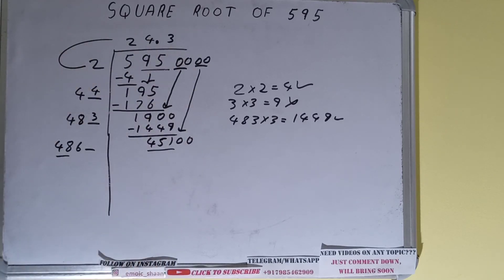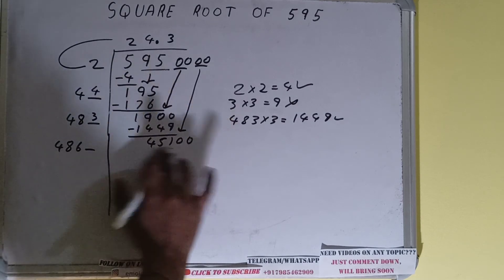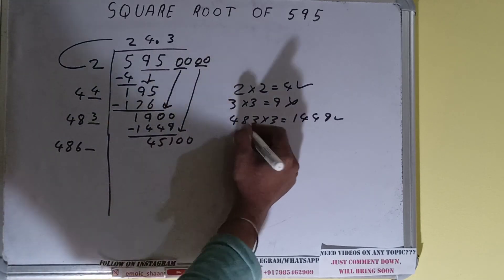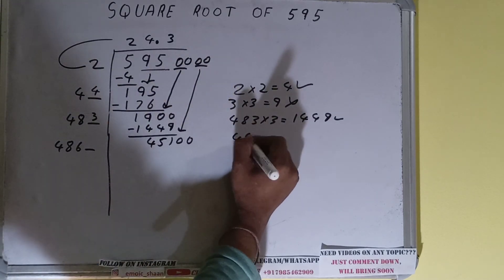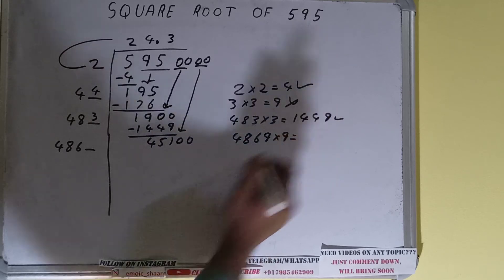Now compare 486 with 451. 489 times 9 gives 4401, so we can try nine times. 4869 times 9 we can try.